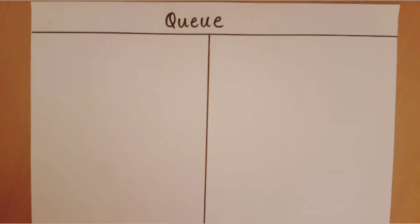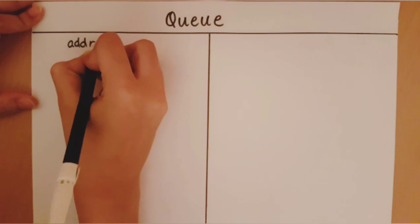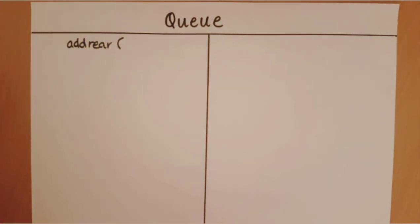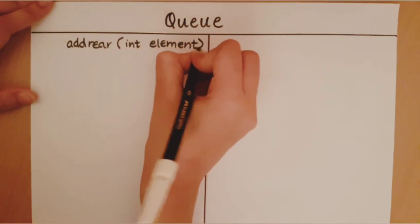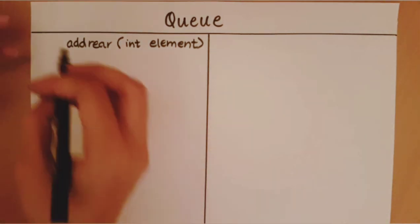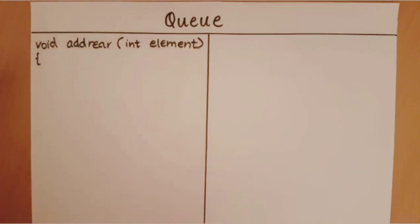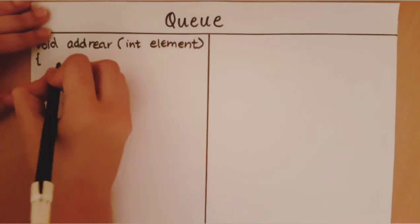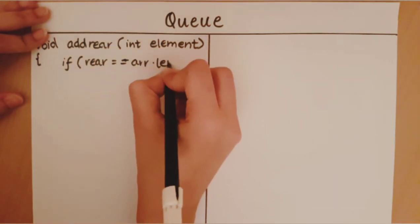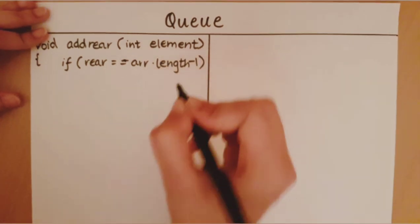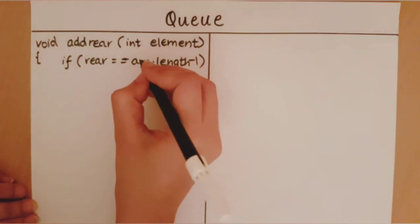I'm going to start with adding an element to the queue at the rear. This function requires an input variable so I know what element I will need to add to the queue. This function only adds a value to the queue, so it has no return type. The first thing I must check when adding an element is whether the queue is full — that is, when rear equals the last index of the array, we say the queue is full.